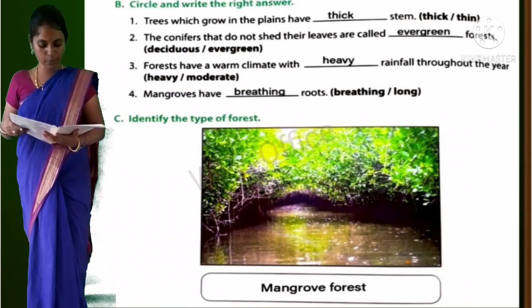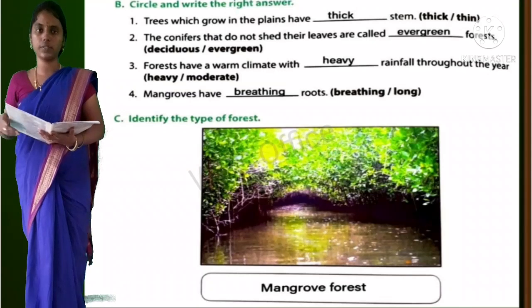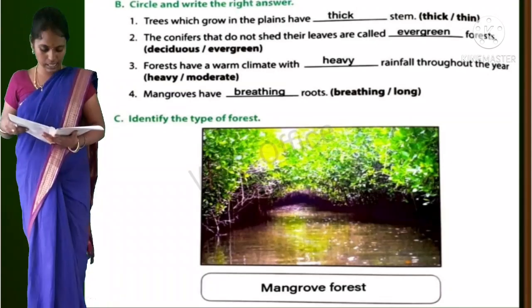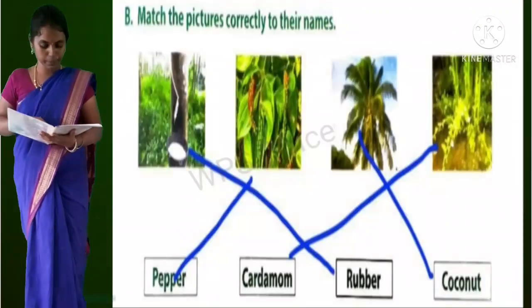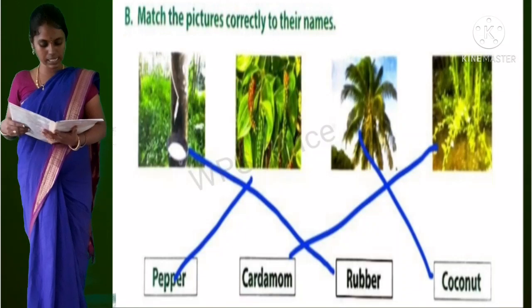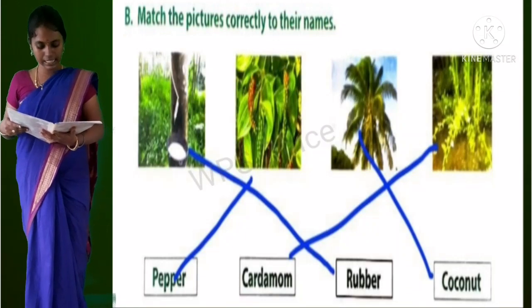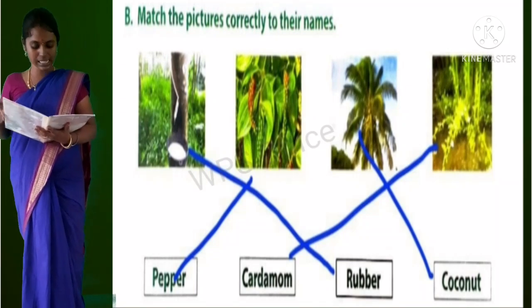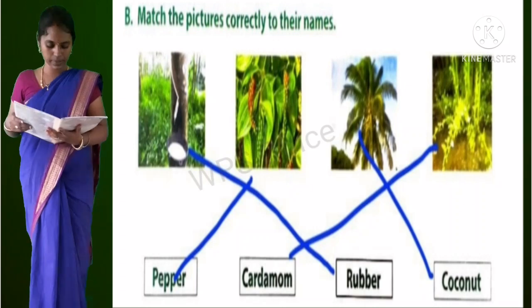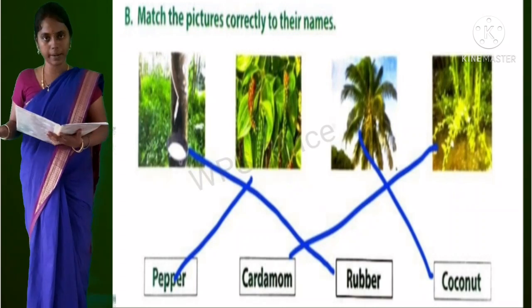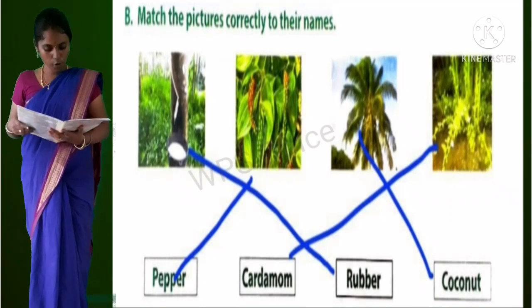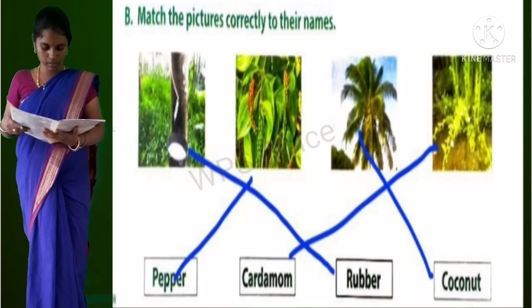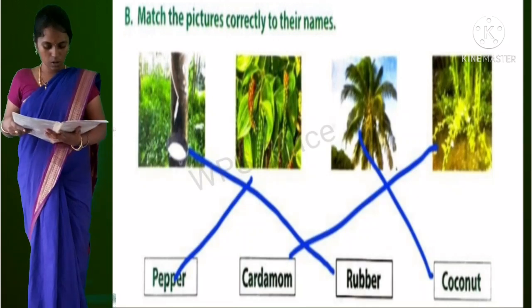Section C: Identify the type of forest from the picture. Answer is mangrove forest. Worksheet 2, Section B: Match the picture correctly to their names. Four pictures are given - first one is rubber tree, second one is pepper, third one is coconut tree, fourth one is cardamom.